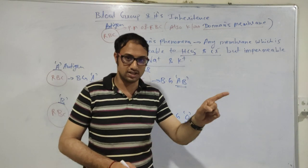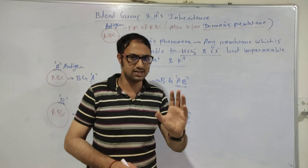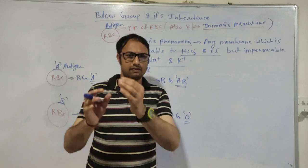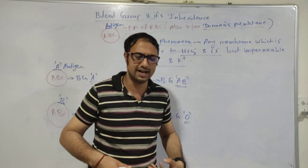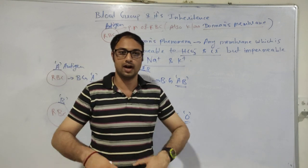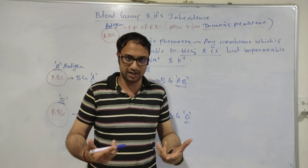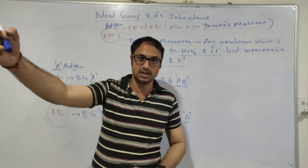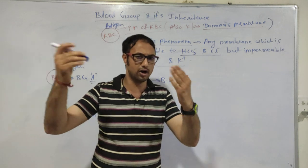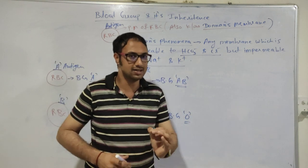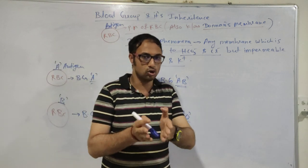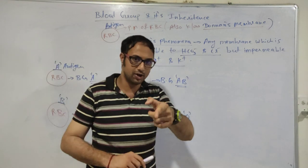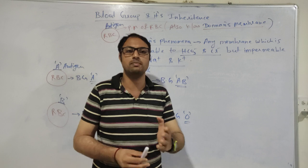In immunology, when any foreign pathogen — any foreign bacteria or virus — enters inside our body, our immune system gets activated because a foreign particle or foreign organism has entered the body. That foreign pathogen is called an antigen. But in the case of the ABO system of blood group, the meaning of antigen is somewhat different.